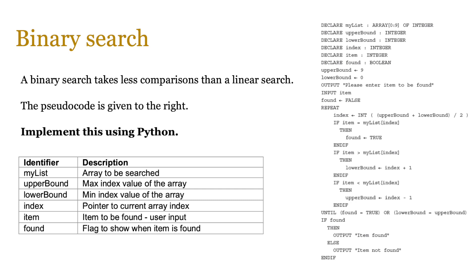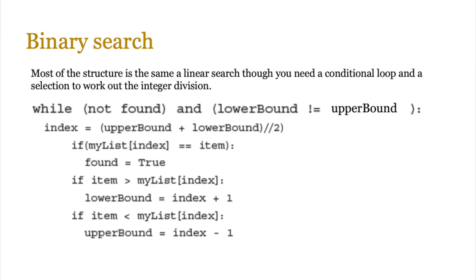Pause the video and have a look to make sure you understand how this works. On screen you'll see a short loop using 'while' because there's no repeat-until in Python. This allows you to code a binary search using Python. You could take the previous search code — you already have an array, a found flag, and the input part. Can you then use this while loop to search that particular list and come up with the answer? I'll leave that up to you to try and work it out.